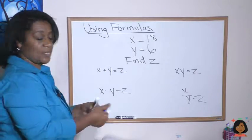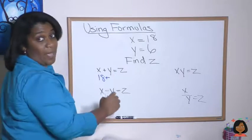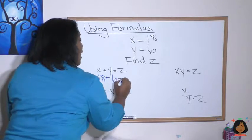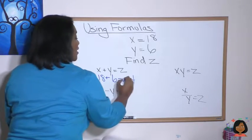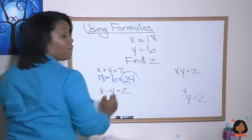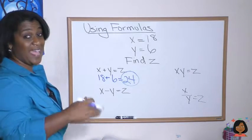18 plus y is 6, and let's go ahead and find z. Well 8 and 6 is 14 and 1 and 1 is 2, so 24 is our answer for that formula. Different formula, x minus y equals z, so we're gonna do 18 minus 6 and we know that gives us 12.